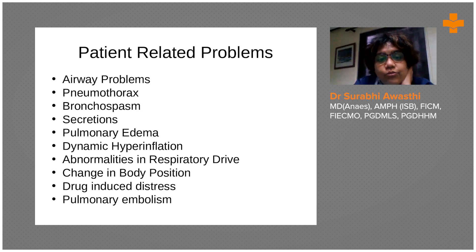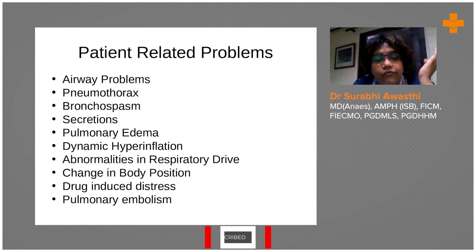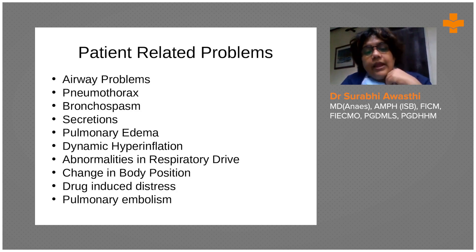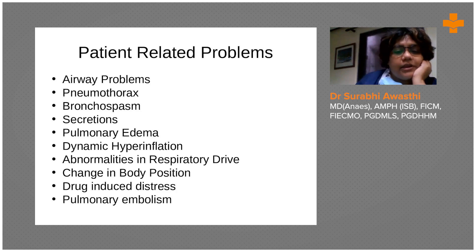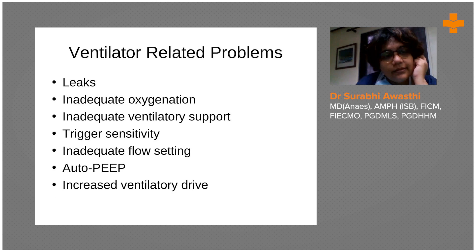The second category is problems with the lung, such as pneumothorax. You can also have secretions, bronchospasm, and a change in body position. Anytime you change the patient's body position, ventilator alarms may go off because in each body position the compliance of the lung or the ventilated part of the lung is different. Sometimes even drug-induced distress can be a cause, as well as other causes like pulmonary embolism.